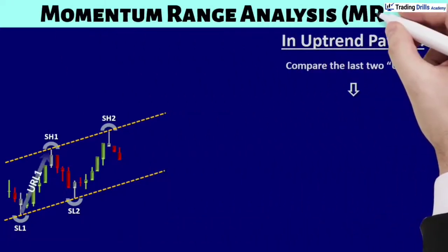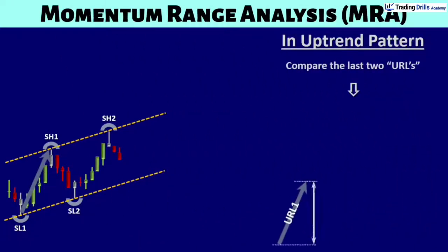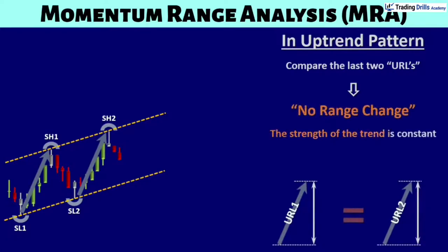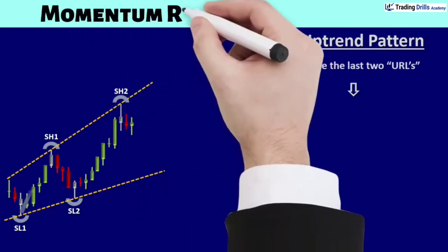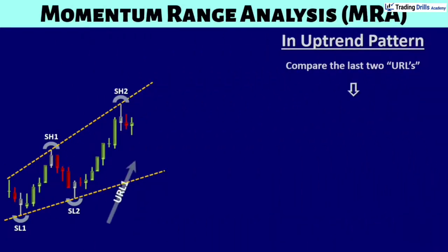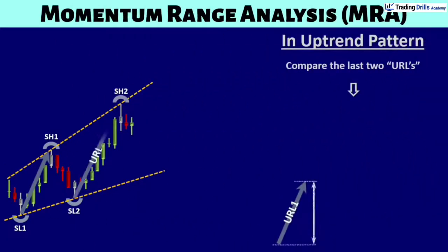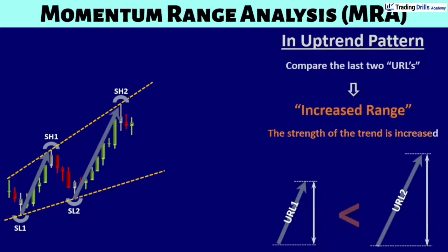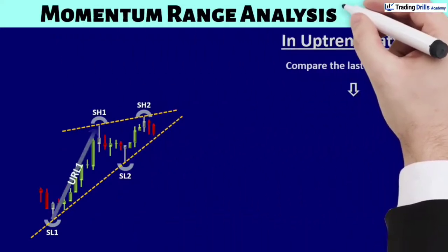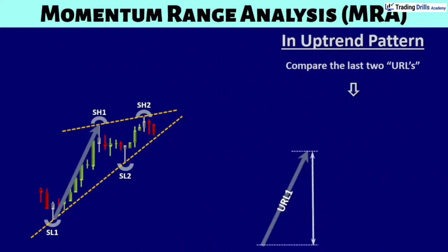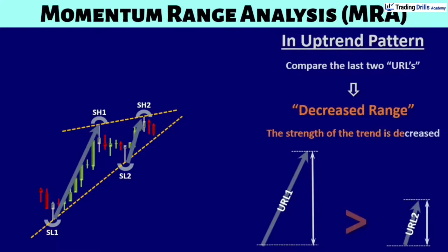In the momentum range analysis of an established uptrend, compare the last two upward range lines. No change in range means the strength of the trend is constant. An expansion of the range means the strength of the trend is increasing. A contraction of the range means the strength of the trend is decreasing.